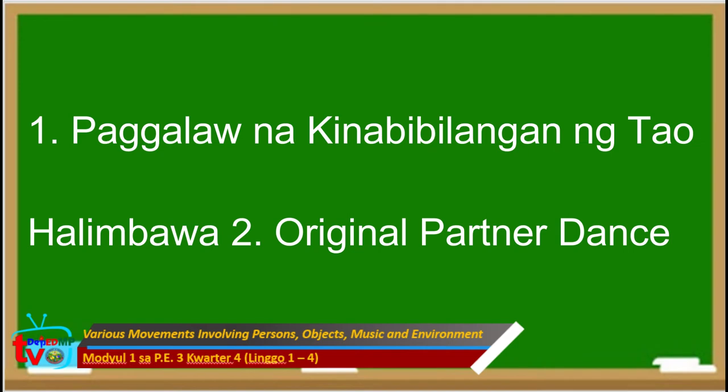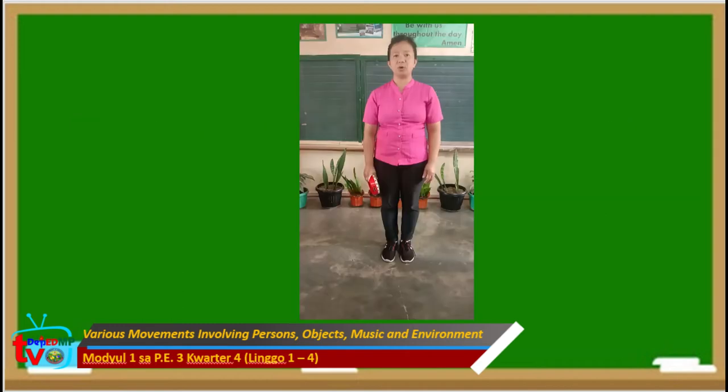Ikalawang halimbawa sa unang paggalaw ay ang original partner dance. Gamit ang 4-4 beat, ang mga pwedeng gamitin sa gawain ito ay drum o improvised drum gaya ng galon, tamborin o improvised tamborin na gawa sa tansan. Halimbawa ng maaaring gawing steps na pwedeng gawin na mag-isa dahil sa pandemya at pwedeng gawin na may kapareha. Maaaring ring dagdagan ang steps at makakalikha ka ng isang sayaw. Sa steps na ito, ay makakabuo ka ng 8-count movement pattern.